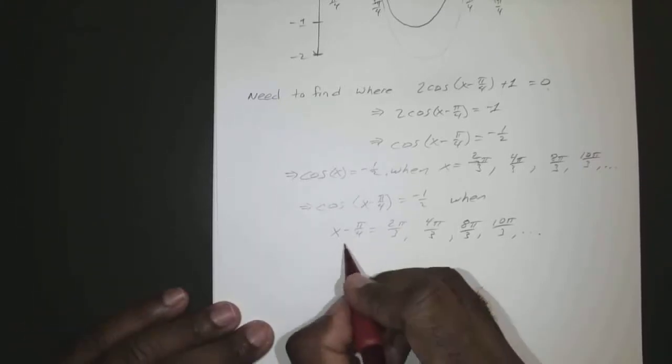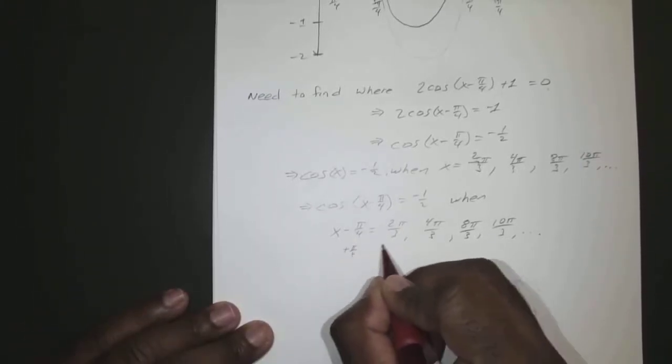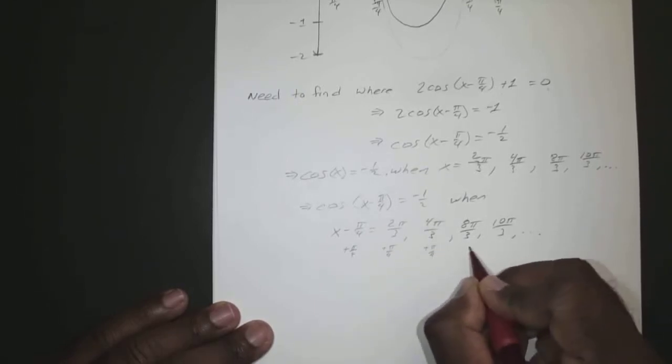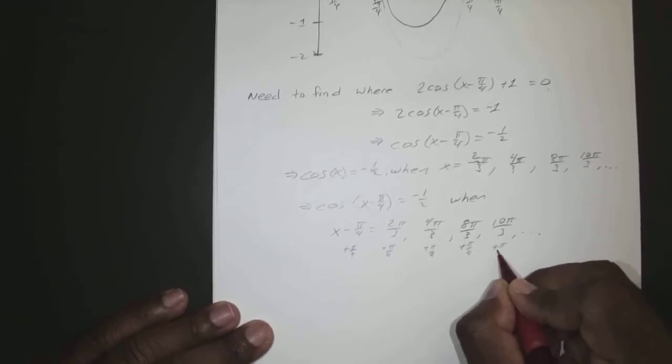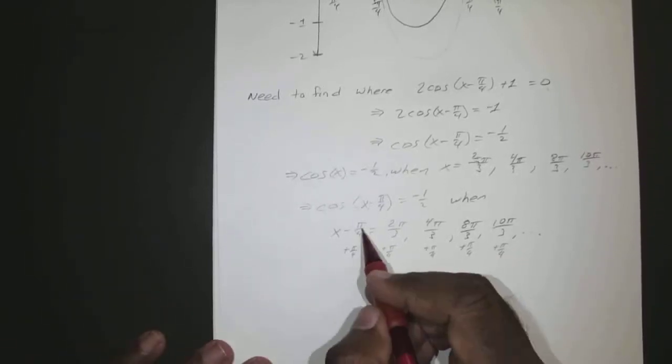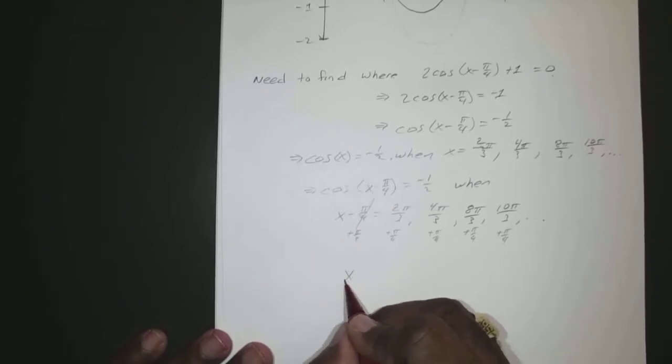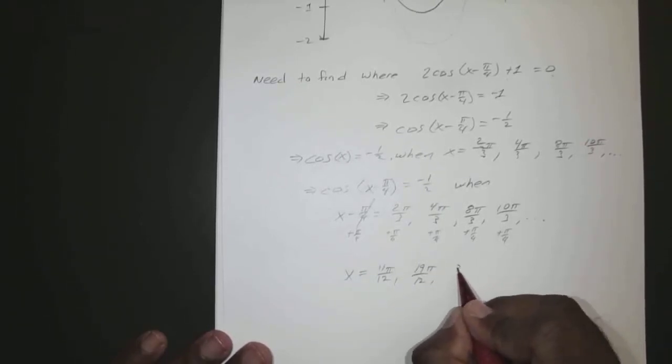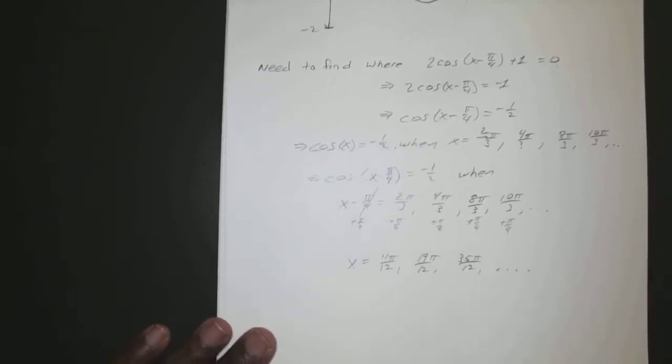So that means if we add pi over 4, those cancel out, so x would have to equal 11 pi over 12, 19 pi over 12, 35 pi over 12, and so forth and so on.